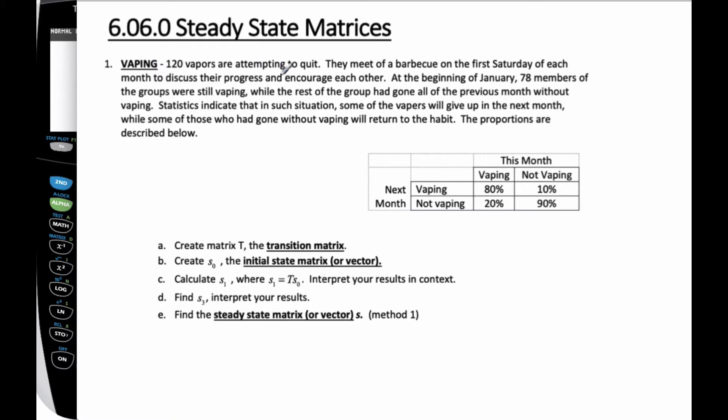So we have 120 vapers that are attempting to quit. They meet at a barbecue on the first Saturday of each month to discuss their progress and encourage each other. At the beginning of January, 78 members of the group were still vaping, while the rest of the group had gone all the previous month without vaping. So that means 78 minus 120, that's going to be 42 who are not vaping. Statistics indicate that in such a situation, some of the vapers will give up in the next month, while some who had gone without vaping will return to the habit. Proportions are described below. So here's this month we have these people who have not vaped, or are going to vape next month, who are not vaping now, but they'll fall and start vaping, and so on and so forth.